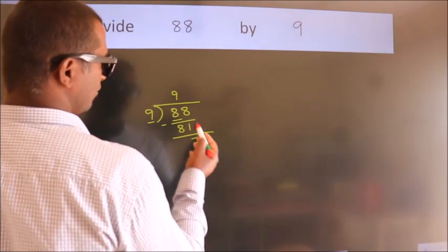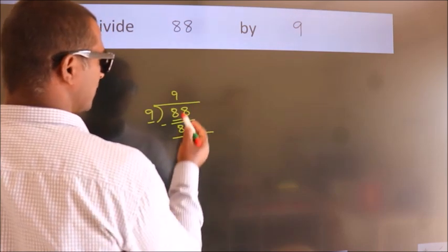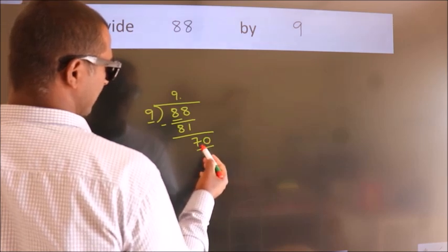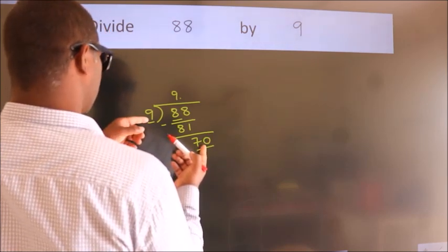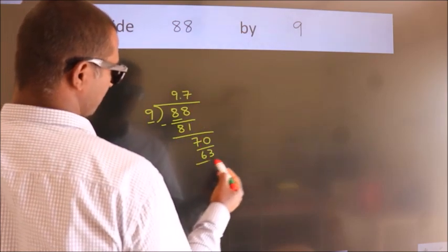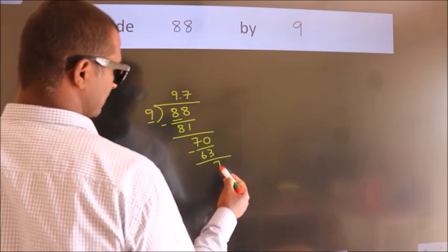After this, no more numbers to bring down. So what we do is, we put a dot and take 0. So 70. A number close to 70 in the 9 table is 9 times 7 equals 63. Now we subtract. We get 7.